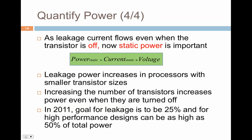This leakage current flows even when the transistor is off, and that's why static power is becoming a very important problem. Static power is the leakage current flowing through the transistor multiplied by the voltage. Today, when you compute, you compute both the dynamic power of the system as well as the static power. Depending on the number of components, static power can have a bigger chunk of the total power. Leakage power increases in processors with smaller transistor sizing, and increasing the number of transistors increases power even when they are turned off.